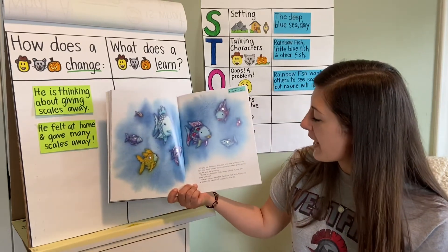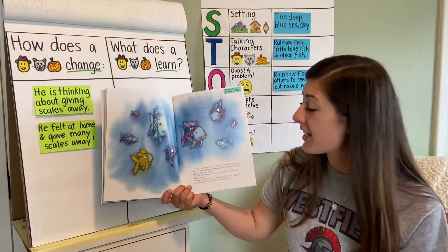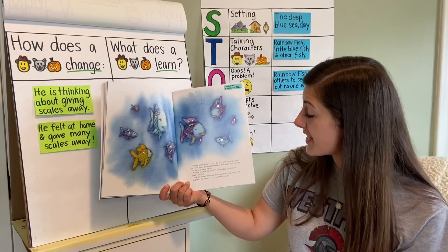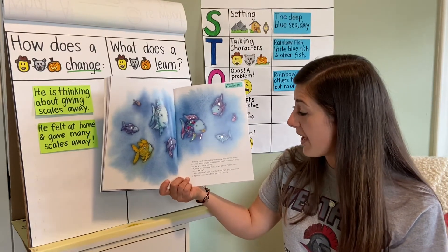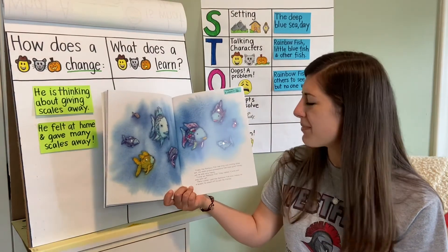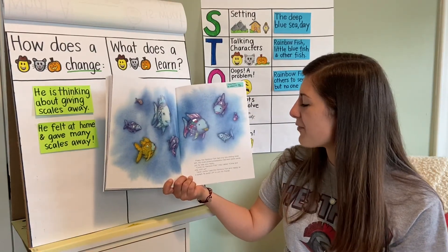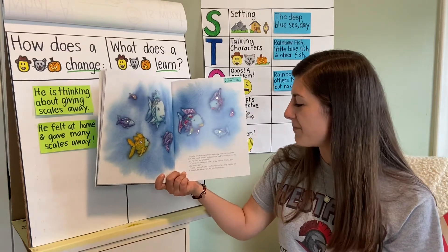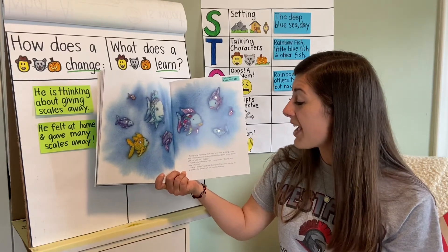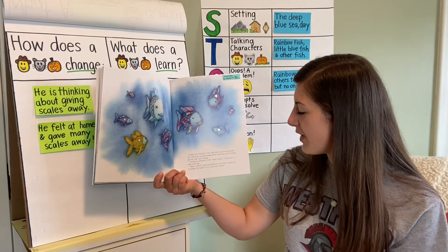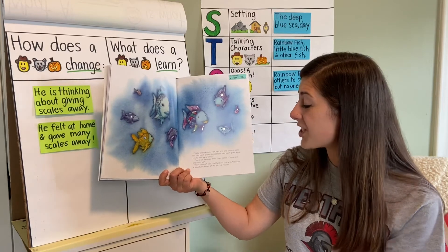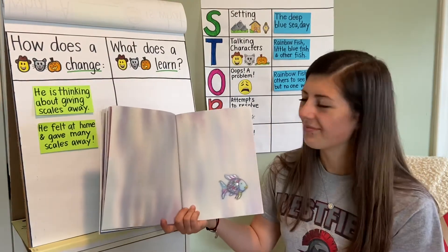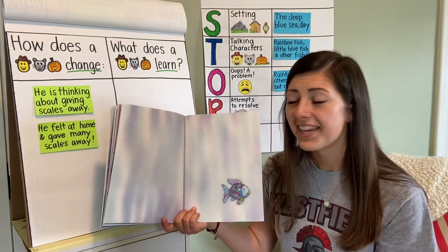Finally, the Rainbow Fish had only one shining scale left. His most prized possessions had been given away, yet he was very happy. Come on, Rainbow Fish, they called. Come and play with us. Here I come, said the Rainbow Fish, and happy as a splash, he swam off to join his friends. The end.